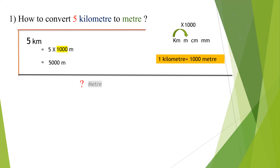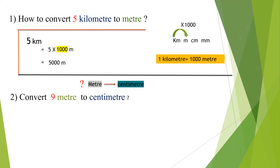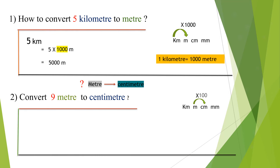How to convert meters to centimeters? For example, convert 9 meters to centimeters. To convert meters to centimeters, multiply the meter length value by 100. 9 meters is equal to 9 × 100. We already know that 1 meter is equal to 100 centimeters. So, 9 × 100 is equal to 900 cm.